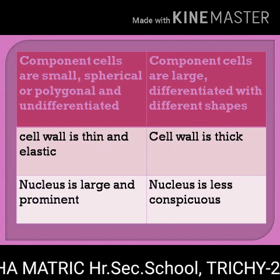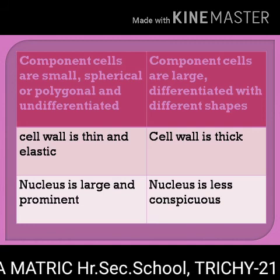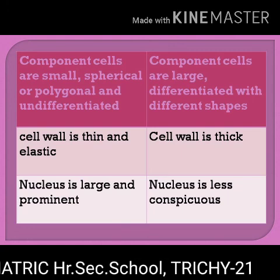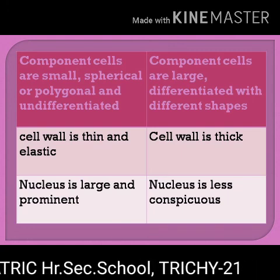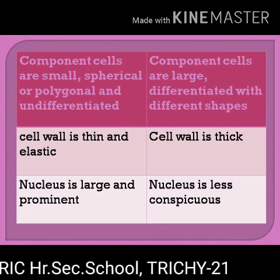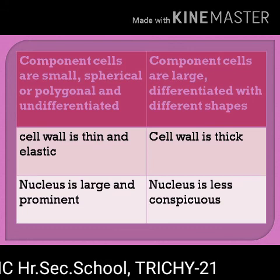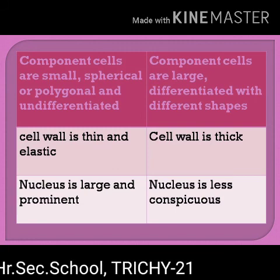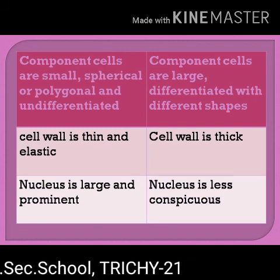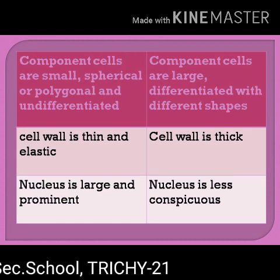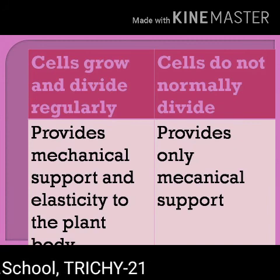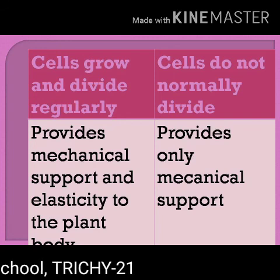In meristematic tissue, component cells are small, spherical or polygonal, and undifferentiated. In permanent tissue, component cells are large, differentiated, with different shapes. In meristematic tissue, the cell wall is thin and elastic. In permanent tissue, the cell wall is thick. In meristematic tissue, the nucleus is large and prominent. In permanent tissue, the nucleus is less conspicuous. In meristematic tissue, cells grow and divide regularly. In permanent tissue, cells do not normally divide.